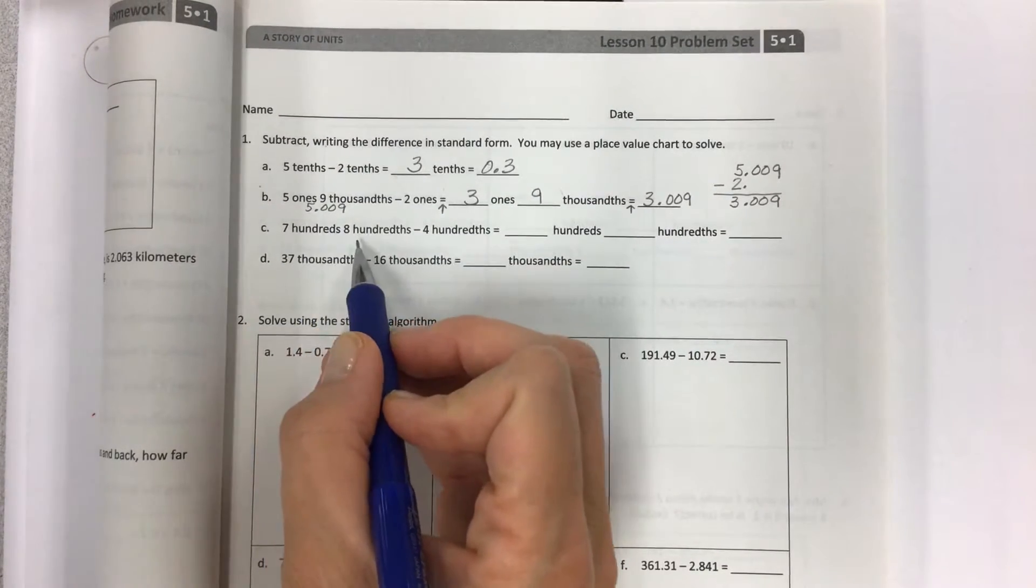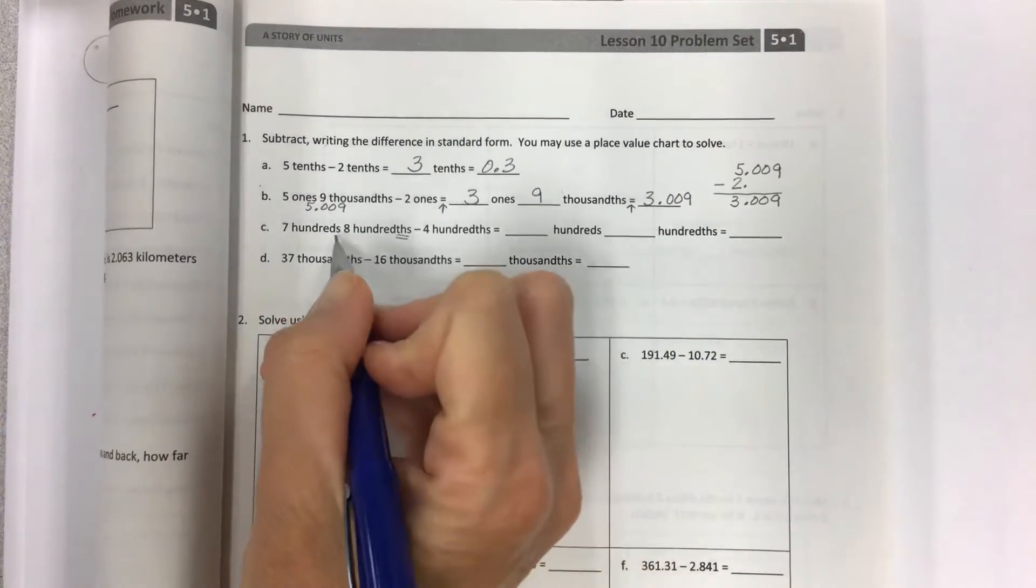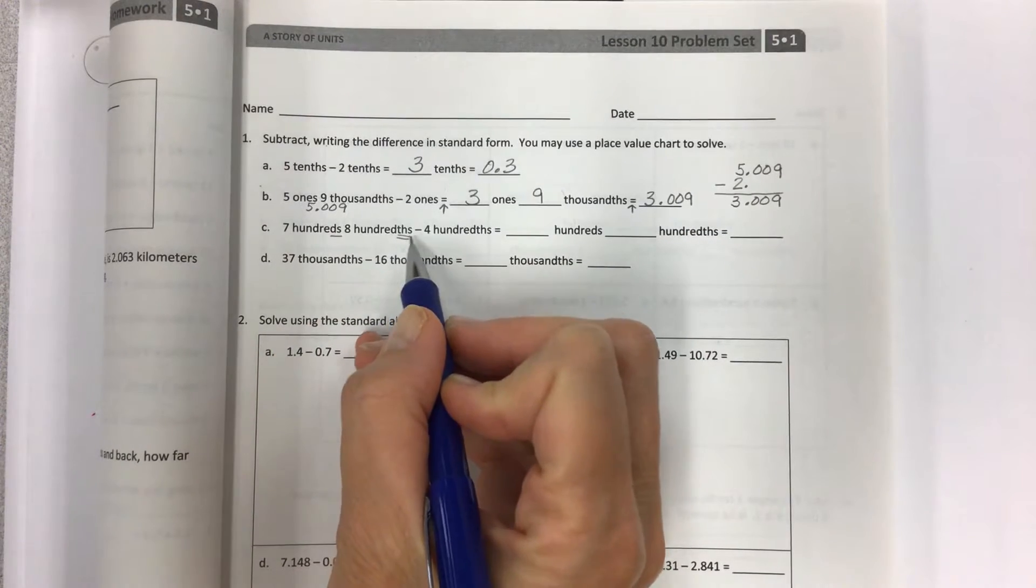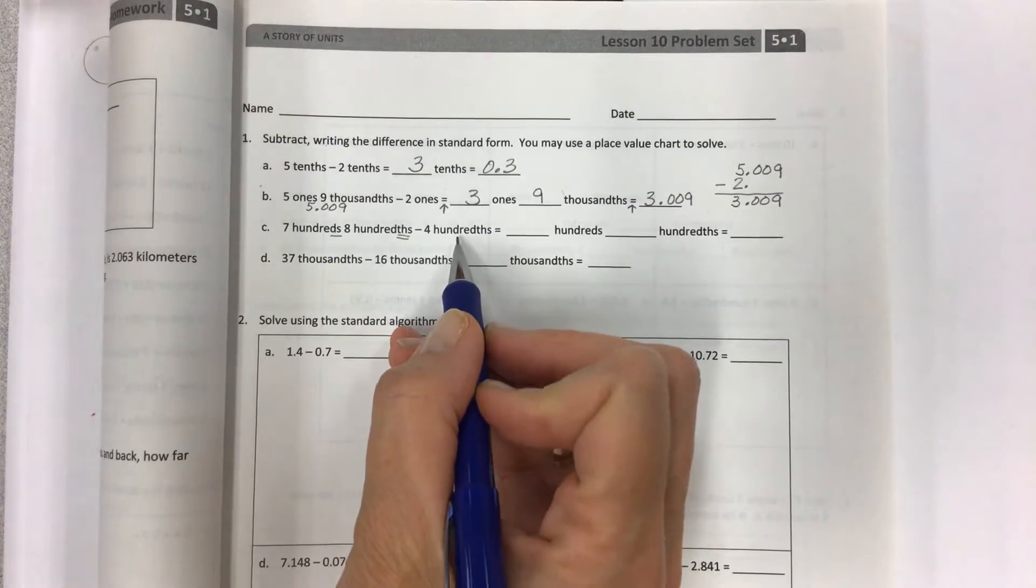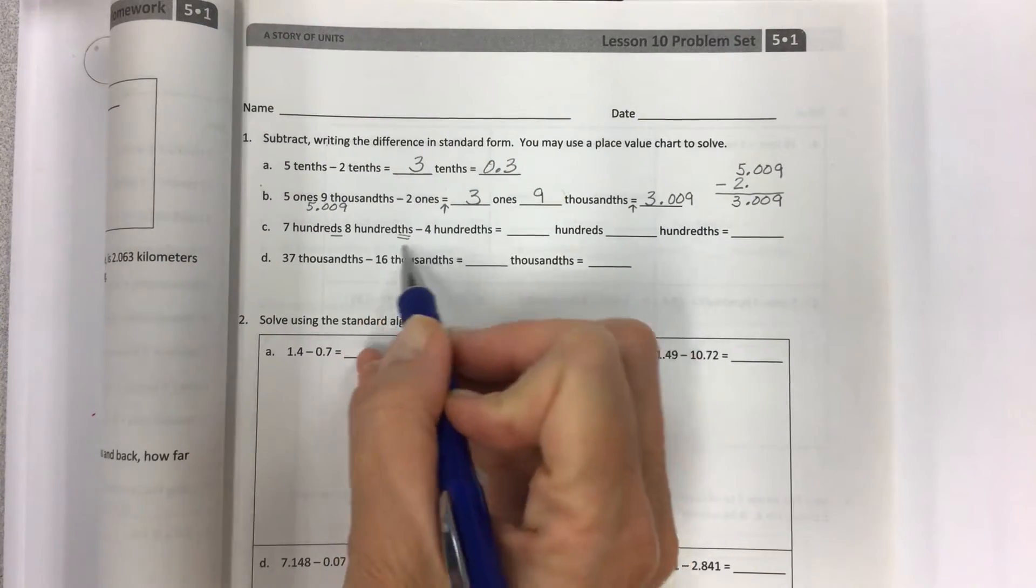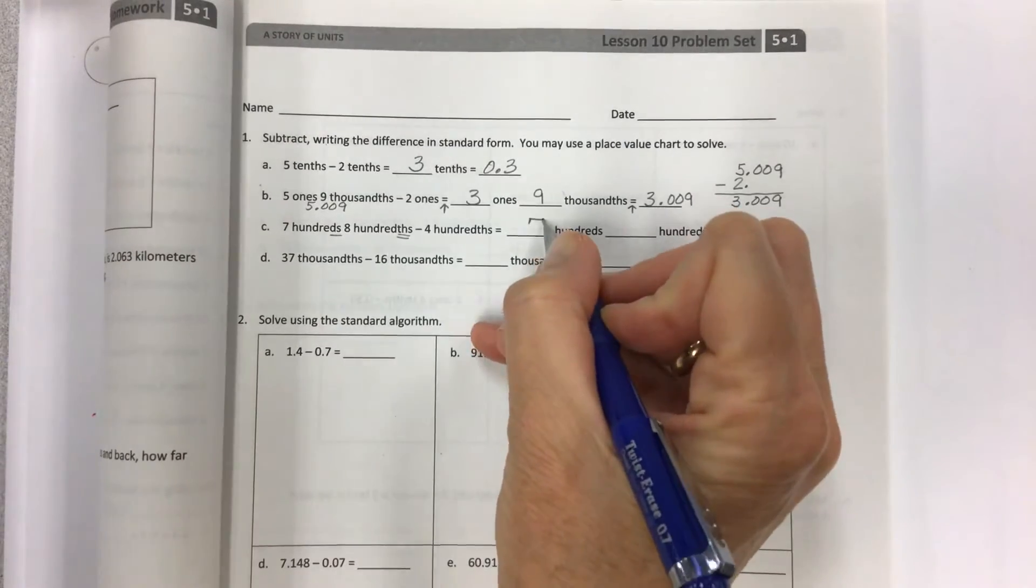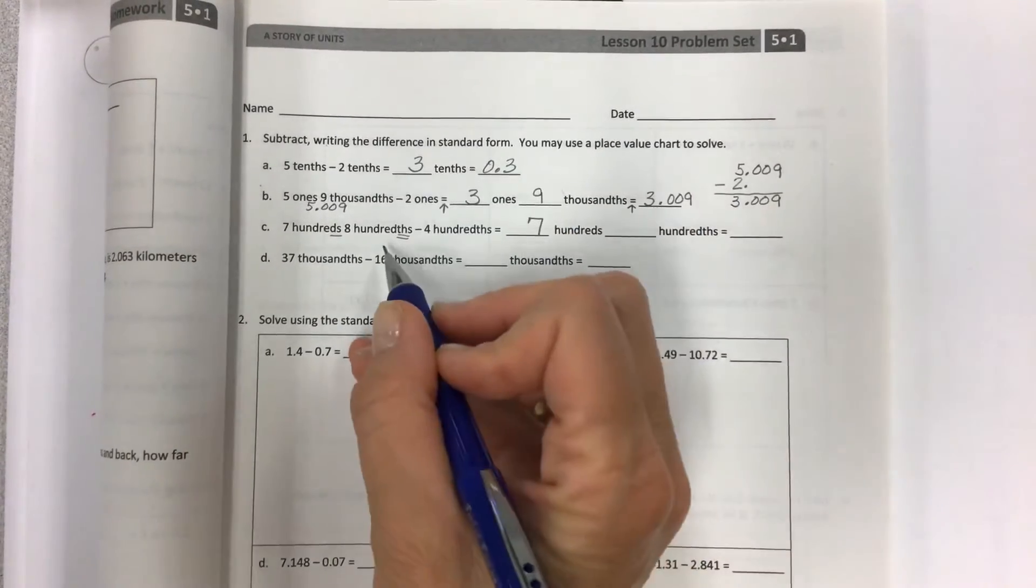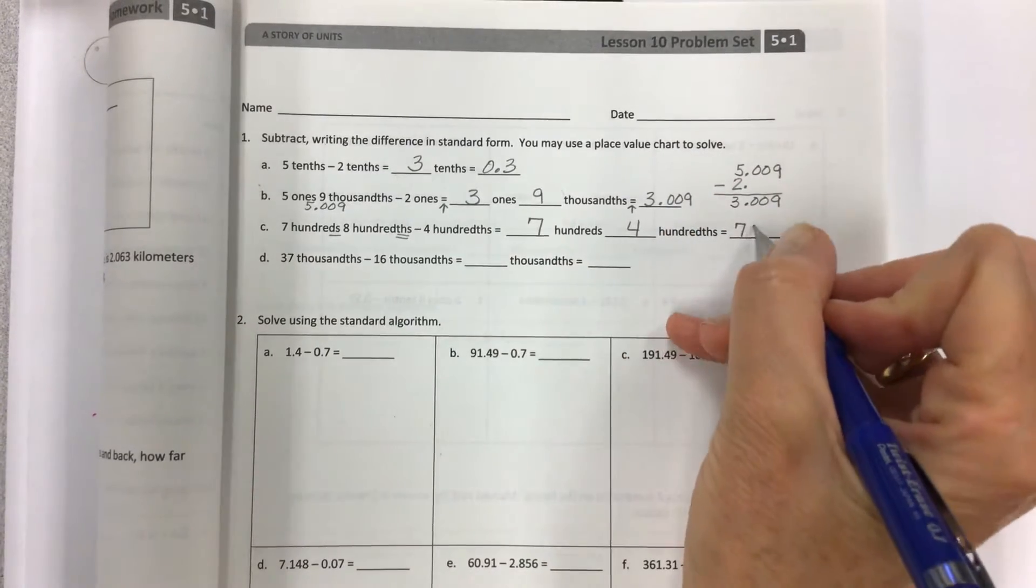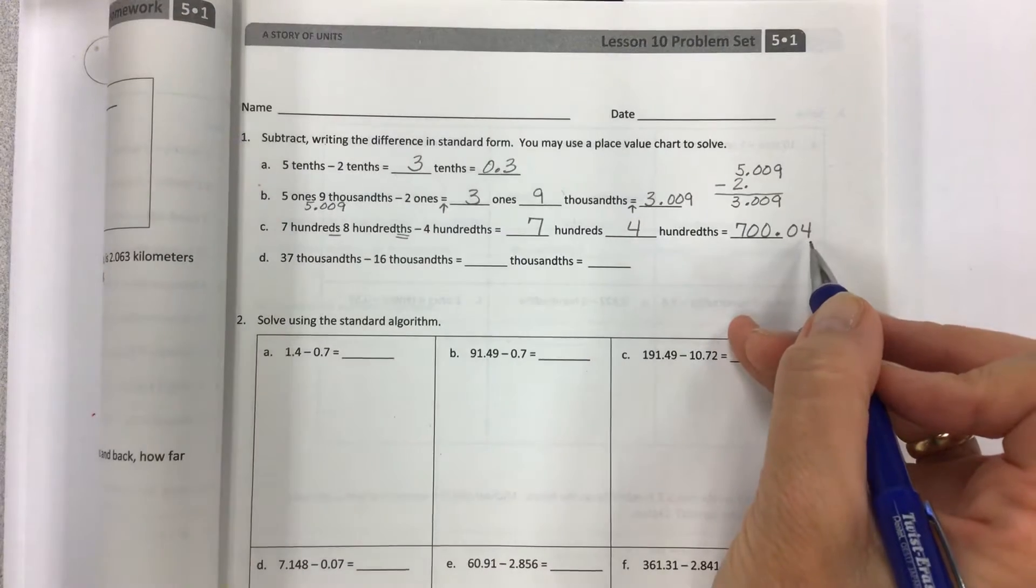7 hundredths, 8 hundredths. Watch out. This is whole number. This is a decimal fraction. Minus 4 hundredths. And again, we're just taking the hundredths away from the hundredths, and you don't mess with the whole number, so you're going to end up with 7 hundredths still, and then this is going to be your 4 hundredths, which is going to look like 700 and 4 hundredths.